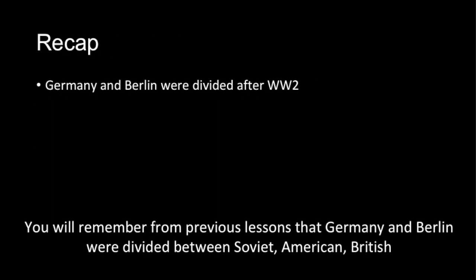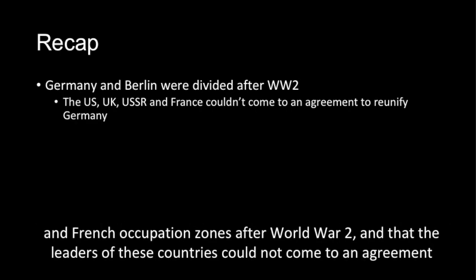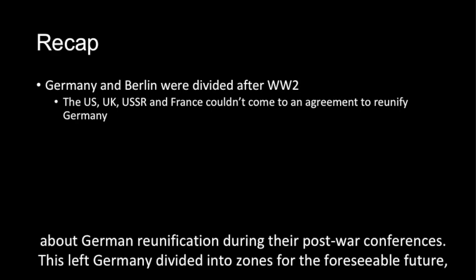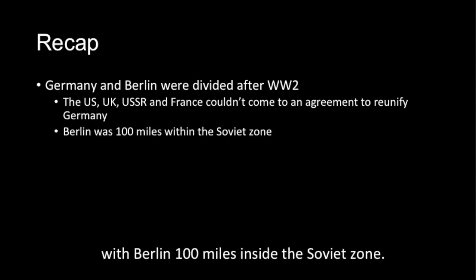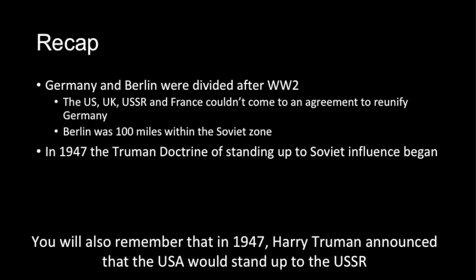You will remember from previous lessons that Germany and Berlin were divided between Soviet, American, British and French occupation zones after World War Two, and that the leaders of these countries could not come to an agreement about German reunification during the post-war conferences. This left Germany divided into zones for the foreseeable future, with Berlin 100 miles inside the Soviet zone.